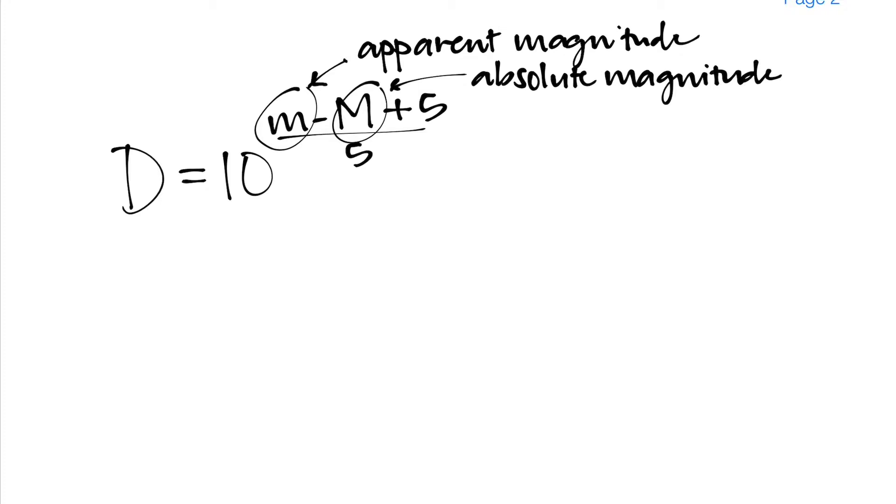Lowercase m represents the apparent magnitude of the star and uppercase M represents the absolute magnitude. Now these two magnitudes are going to be either given to you or you can determine them from the HR diagram if you're using the HR diagram as your source for the absolute magnitude, which in some cases we will do this for our class.